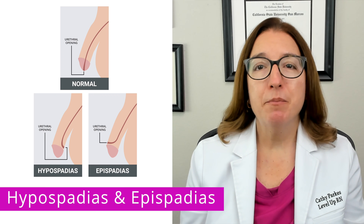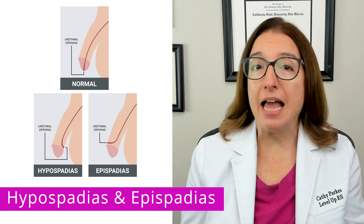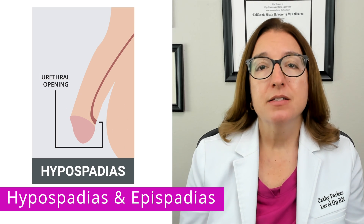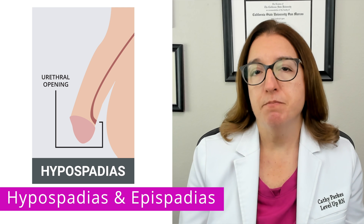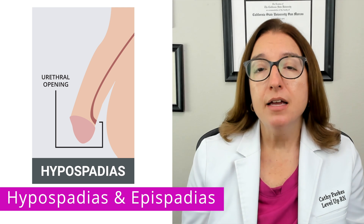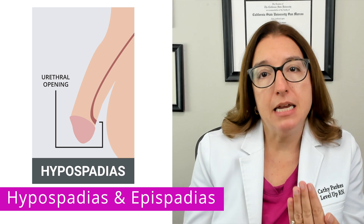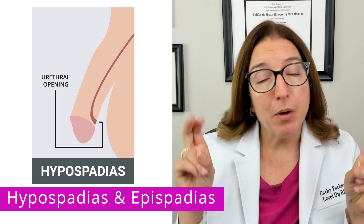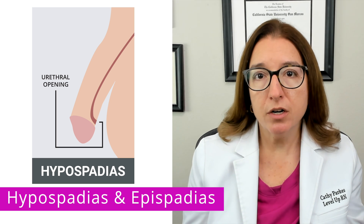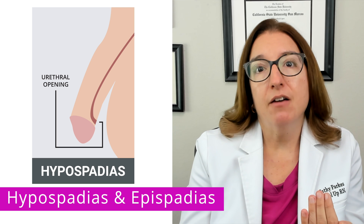Hypospadias and epispadias are congenital defects that result in the abnormal placement of the urethral meatus. Hypospadias primarily affects males. With this disorder, the urethral opening is on the ventral surface or underside of the penis. Hypo means below or under, so the urethral opening is on the underside of the penis.